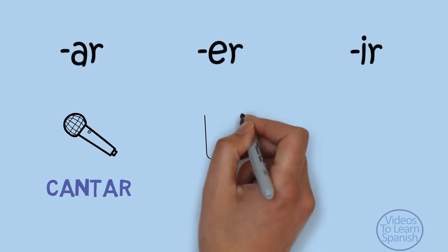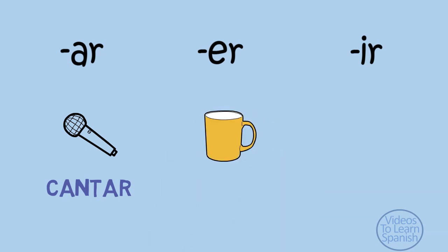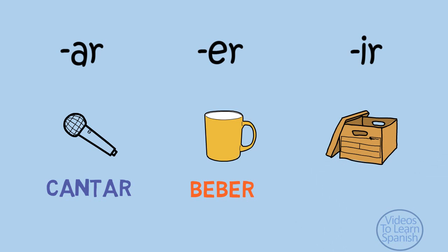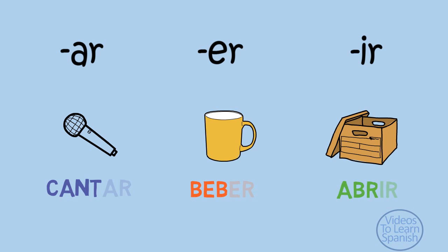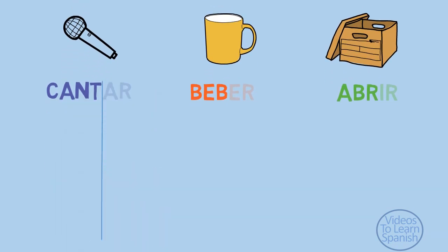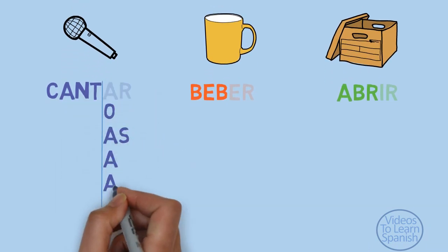We will take cantar, to sing, as our model conjugation verb for those finishing by AR; beber, to drink, for those finishing by ER; and abrir, to open, for those finishing by IR. To conjugate in the present tense, we start by removing the last two letters from the infinitive form. The remaining part of the verb is what we call the stem, or the root — the part that doesn't change. Then we only need to add the endings, which are different for each kind of verb.